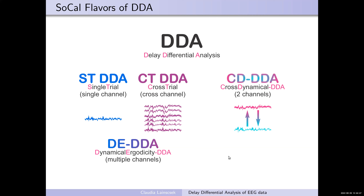I'll now show the Southern California flavors of DDA. I say 'Southern California flavors' because there is also DDA in Austria, where it's applied to genetics. Here we concentrate on EEG data. When I say 'single trial DDA,' I always mean single trial or single channel DDA. When I first named it single trial DDA, I was working on ERP data on different trials and the name made sense. So single trial and single channel are the same, as are cross-trial or cross-channel.